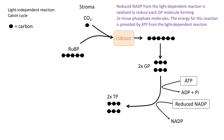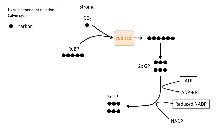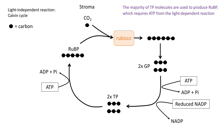It's really important to notice that the ATP and the reduced NADP for this reaction are provided from the light-dependent reaction. More ATP from the light-dependent reaction is also used here to produce ribulose bisphosphate (RuBP) from triose phosphate (TP).